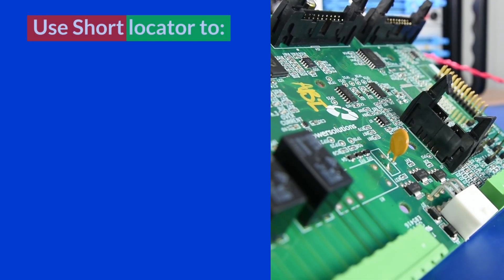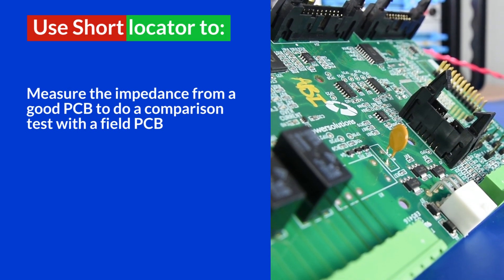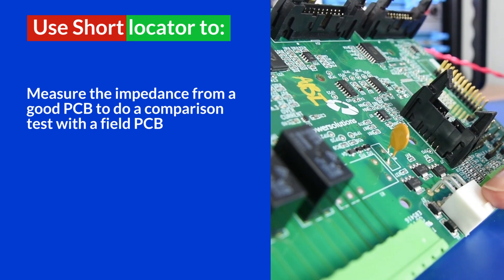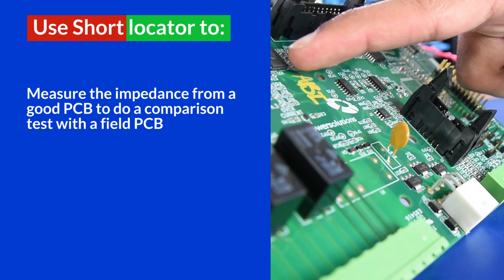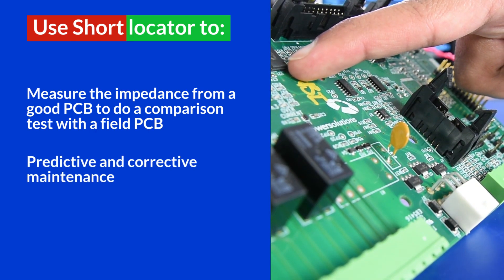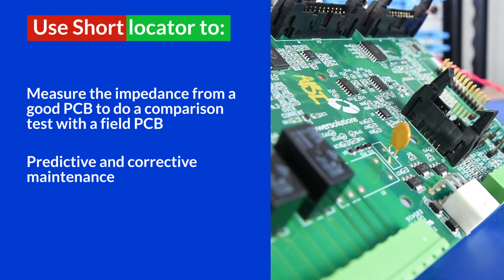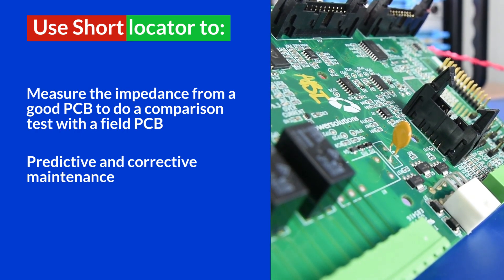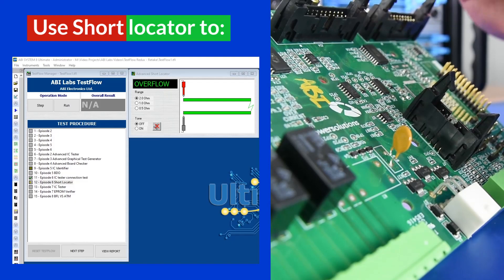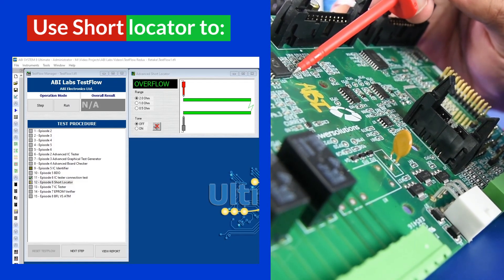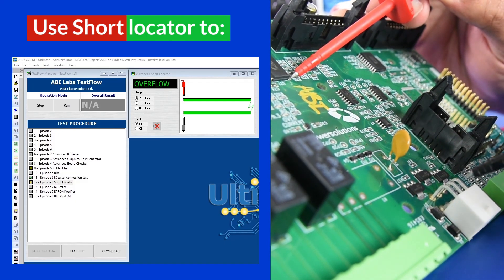What we can do is use the Short Locator — if we have a good working board, we can measure the impedance on it and then use that to compare measurements from a board that's been in the field for a long time. We can use that as a comparison test, and as mentioned, this becomes a way of doing predictive and corrective maintenance.